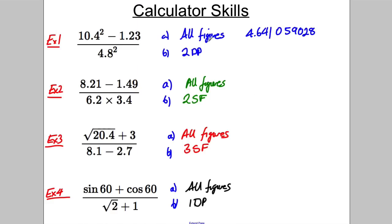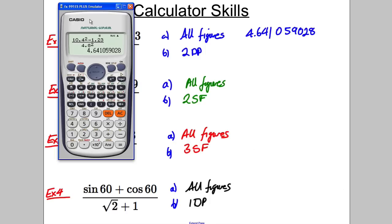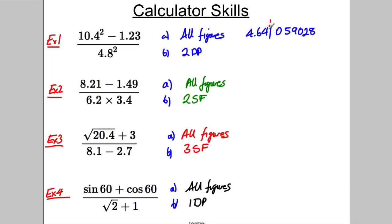Now if we want to round that to two decimal places, we're going to put our line after the second decimal place. Because that's a one, this stays as it is, you round it off, so it's 4.64 to two decimal places. Okay, next one.